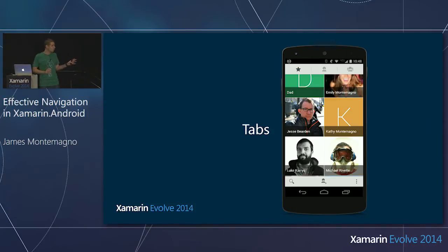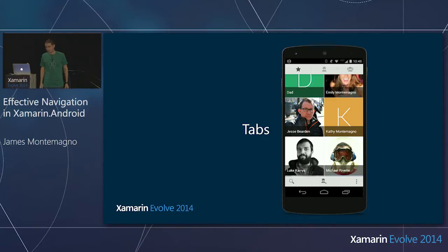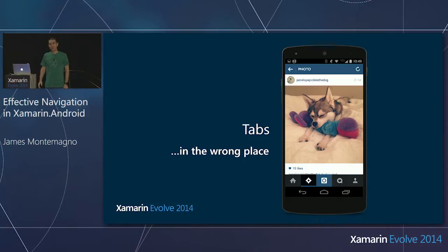Tabs are extremely interesting — with or without words, it doesn't matter. This is just the default contacts list in KitKat. You have favorites and contacts. You can swipe through small, sorted information extremely fast. It makes sense for contacts — I have people, I sort them in different ways, here they are. Now, tabs in the wrong place — this is the biggest quirk. If you're going to use tabs, don't put them at the bottom. That's the biggest thing. It's not natural for Android.